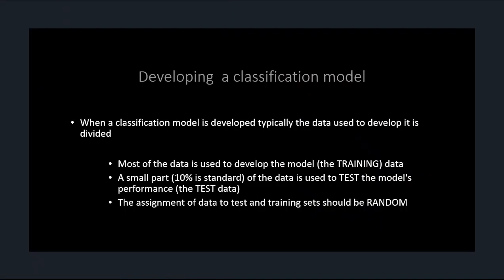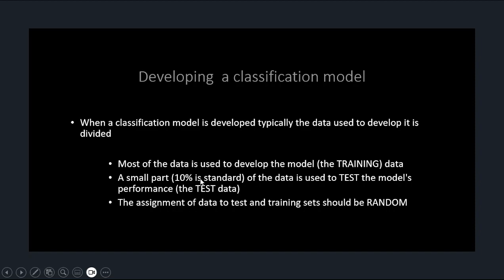When you develop a classification model, you typically use most of the data for training — about 10% you want to use as a test. When you have a super small dataset like one with only 10 values, you might go five and five. But if you have 1,000 values, use 900 of them to make the training model and then use 100 of them — 10% — to test it.